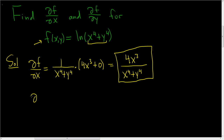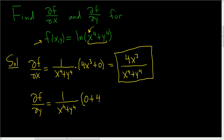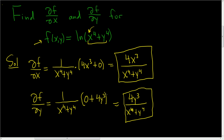Now we'll find del f del y, the partial derivative of f with respect to y. Again, it's 1 over x to the fourth plus y to the fourth, except this time we're treating x as constant. So the derivative of x to the fourth is 0, and the derivative of y to the fourth is 4y cubed. So we end up with 4y cubed over x to the fourth plus y to the fourth. And that's the partial derivative of f with respect to y. I hope this helps.